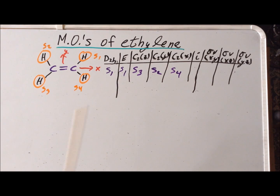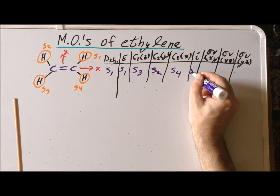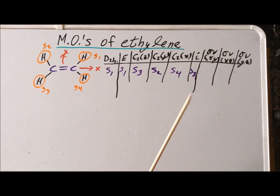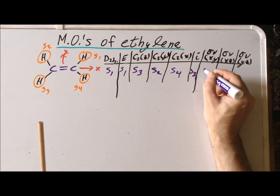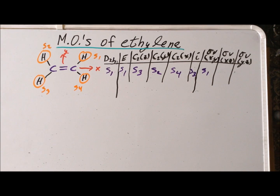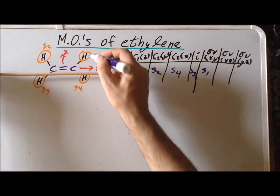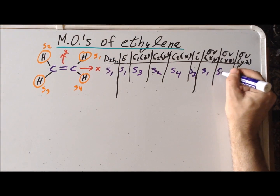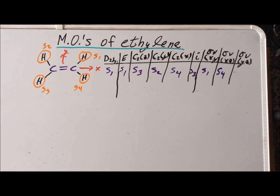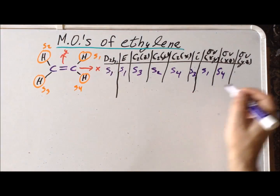The inversion goes through the midpoint, so it takes S1 to S3. Sigma v xy is the plane of the board, so that takes S1 into itself. For sigma v xz, S1 goes to S4. And our last mirror plane, sigma v yz, takes S1 to S2.